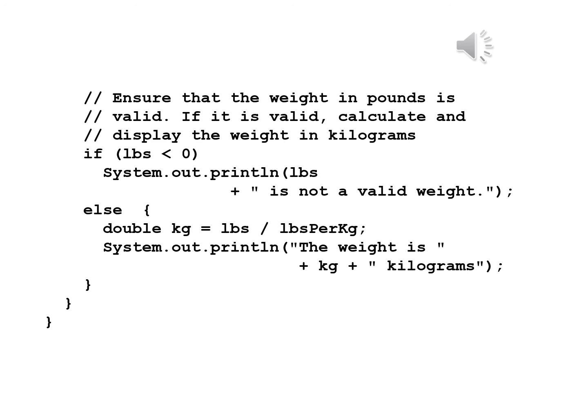We now have a comment: ensure that the weight in pounds is valid; if it is valid, calculate and display the weight in kilograms. We write: if pounds is less than 0 — meaning pounds would be a negative value, which can't be valid — System.out.println pounds + 'is not a valid weight.' Else, with an open brace: double kilograms equals pounds divided by poundsPerKg; System.out.println 'The weight is kg' + kilograms. Notice the else clause has two statements inside an open and close brace, followed by the close brace for the main method and the close brace for the class.